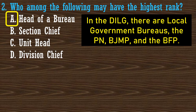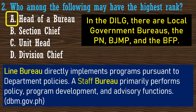There is also what we call the line bureau and the staff bureau. The line bureau refers to the operational units — those that directly implement programs pursuant to department policies for the protection of life and property. Those in operational units directly performing the police role in the community are under the line bureau. On the other hand, those doing administrative work, program development, and advisory functions are called the staff bureau.